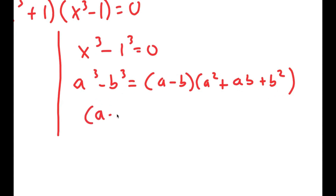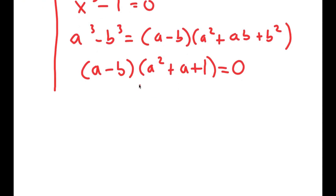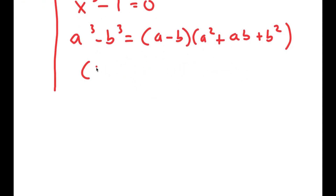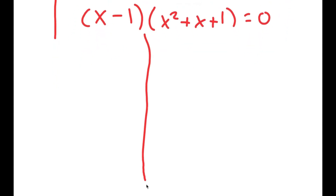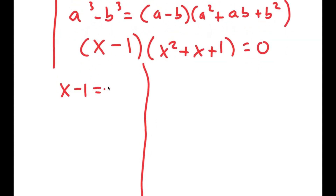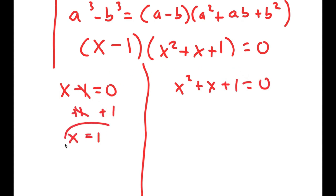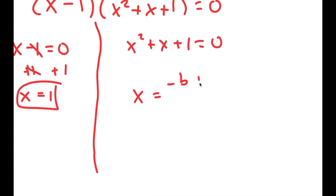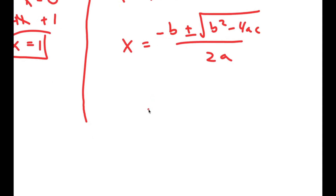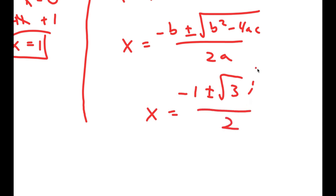This turns into x minus 1 times x squared plus x plus 1 equals zero, giving me two more equations: x minus 1 equals zero and x squared plus x plus 1 equals zero. For x minus 1 equals zero, adding 1 to both sides gives x equals 1. For x squared plus x plus 1 equals zero, I use the quadratic formula to get x equals negative 1 plus or minus the square root of 3 times i, over 2.